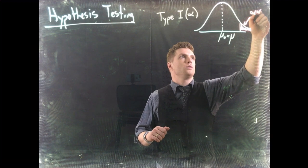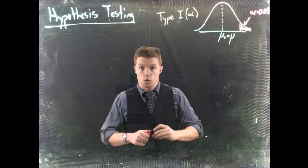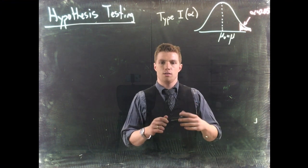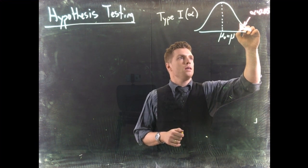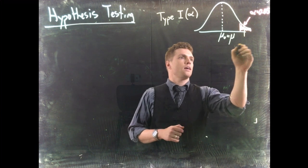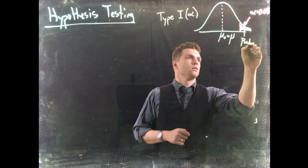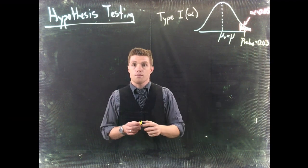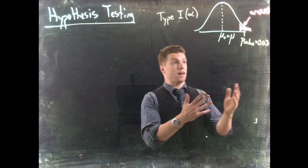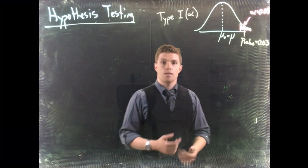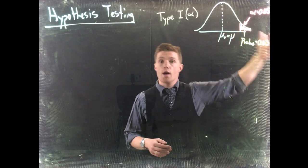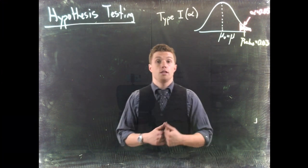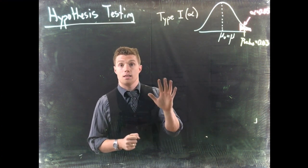We do a random sample — it's a good sample, big enough, actually representative of our population — and we get some value that gives us a p-value equal to 0.03. The p-value tells us this is the probability we would see a result this rare or rarer if the null hypothesis is in fact true.